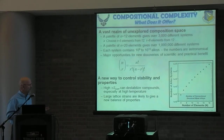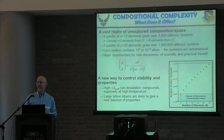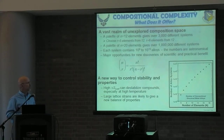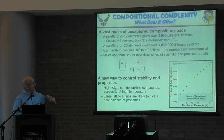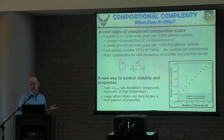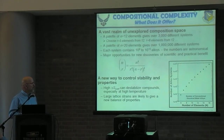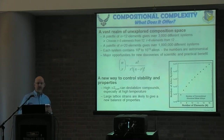You see the gray bar at the bottom — about 10 alloy systems has taken us through the last 300 to 500 years: iron-based, nickel-based, aluminum-based, tin, copper, and so on. Now, if we ask how many compositionally complex alloy systems we can produce using the combinatorics equation, taking five or six elements from 12, we get about 3,000 different systems compared to 10. From a palette of 20 elements, that gives us over a million different systems. We have orders of magnitude more systems to consider than we've looked at before.